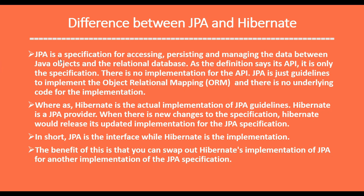Now let's see the difference between JPA and Hibernate. JPA is a specification for accessing, persisting, and managing data between Java objects and the relational database — it is only a specification with no implementation. JPA provides guidelines to implement Object Relational Mapping with no underlying code. Hibernate, on the other hand, is the actual implementation of the JPA guidelines. Hibernate is a JPA provider; whenever there are changes to the specification, Hibernate releases an updated implementation.